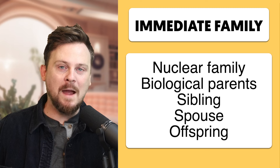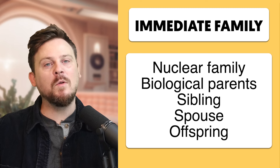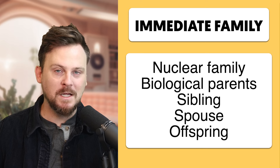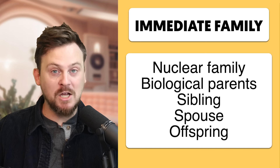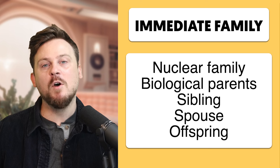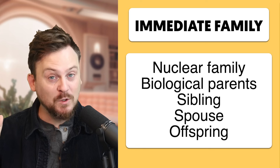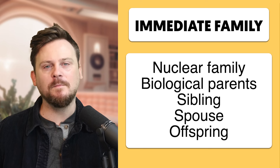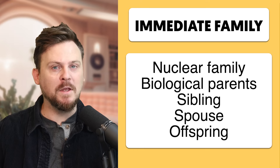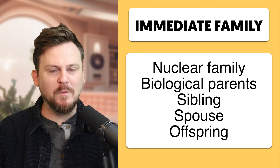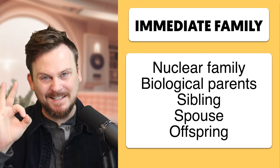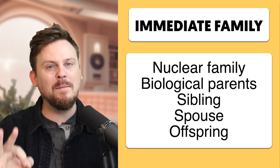Now, what happens when you go one layer out? You're in your extended family. That outside layer — cousins, grandparents, nephews, nieces — those kinds of relationships make up your extended family. So that's a nuclear family, or immediate family. Nuclear family is generally the same thing — it's the center, the family unit.